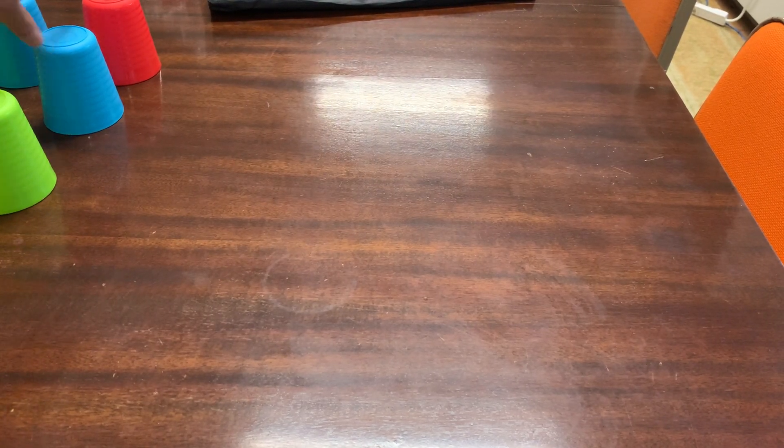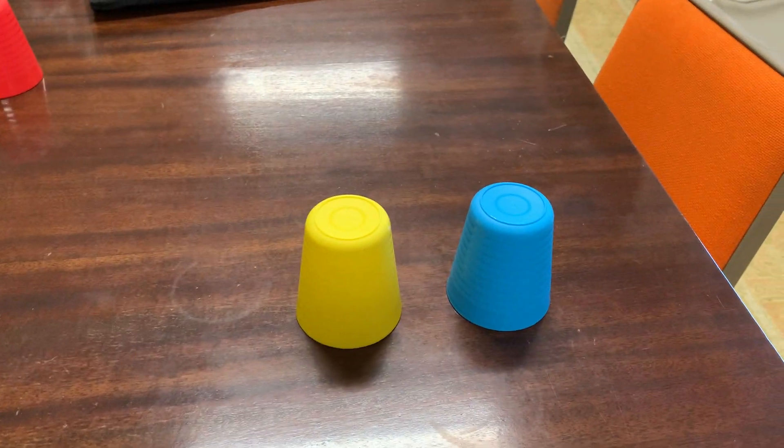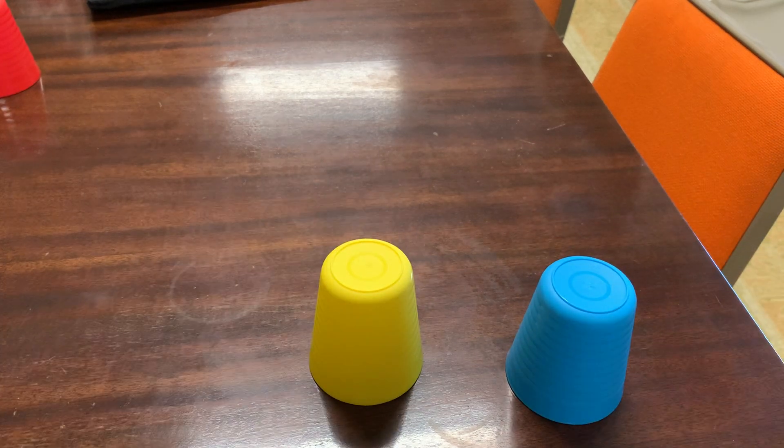So we're going to demonstrate this here. If we had just a yellow, blue cup, we would say, well, maybe both have a treat, or maybe both have nothing under them.